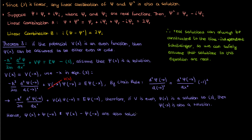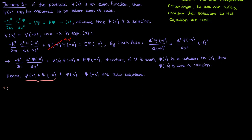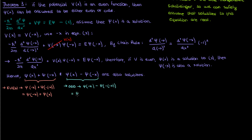If both ψ(x) and ψ(−x) are solutions, then their sum and difference are also solutions. The sum ψ(x) + ψ(−x) is an even function — replacing x by −x gives ψ(−x) + ψ(x), which is the same thing. The difference ψ(x) − ψ(−x) is an odd function — replacing x by −x gives ψ(−x) − ψ(x), which is the negative of the original. Since we can construct even and odd solutions when the potential is even, we have proven that if V(x) is even, then ψ(x) can be assumed to be either even or odd.